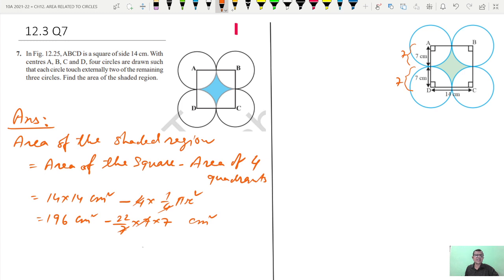Centimeter square. 7 gets cancelled. 196 centimeter square minus 154 centimeter square.